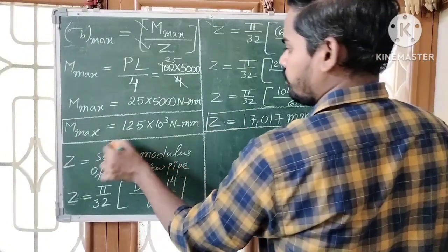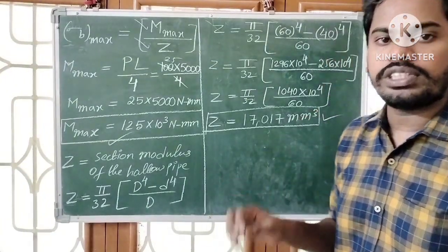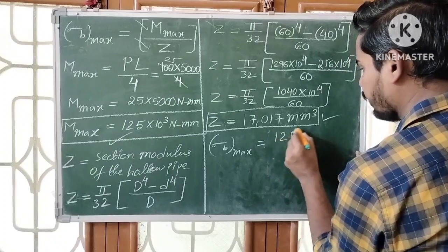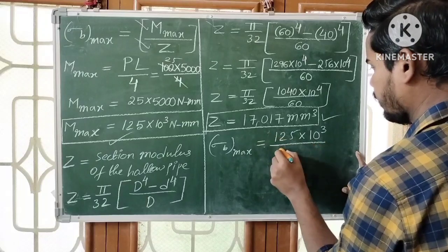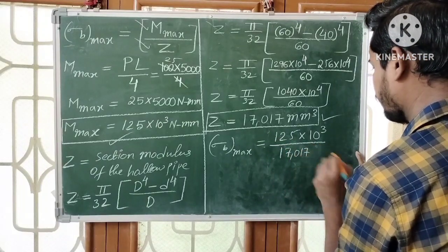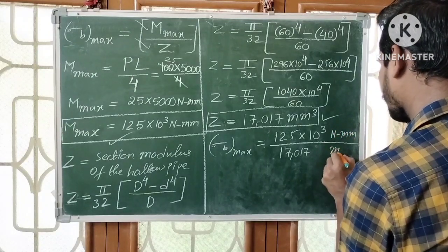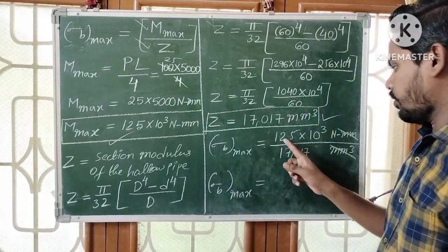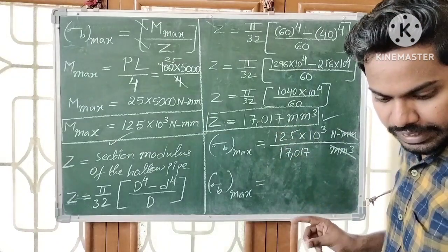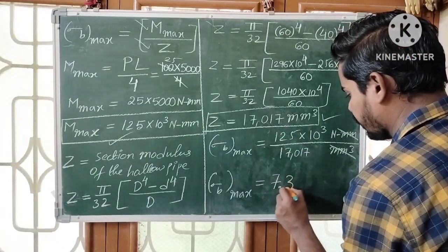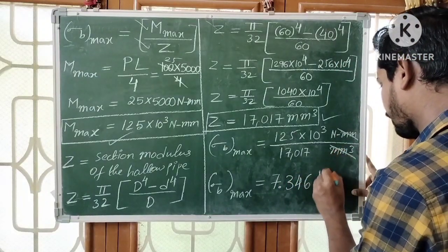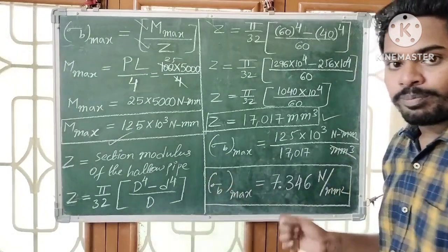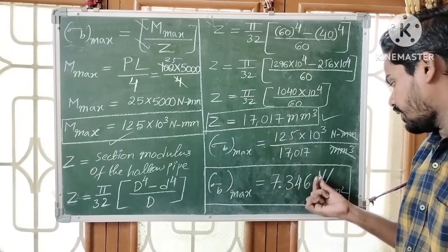Now we have both the maximum bending moment and section modulus, so we can find the maximum bending stress: σB_max = M_max / Z = (125 × 10³) / 1701.7 ≈ 7.346 N/mm². Therefore, the maximum bending stress induced in the hollow pipe is 7.346 N/mm².